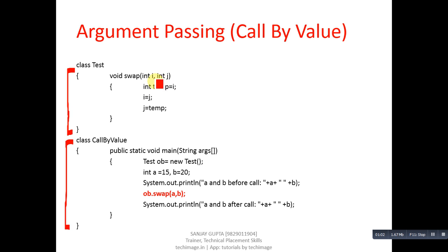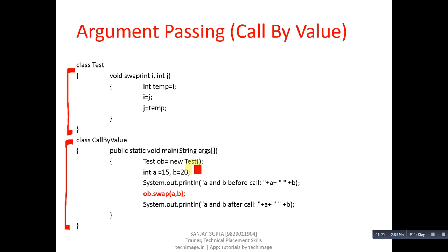The Test class contains a swap method in which two integer type arguments are received and a swapping operation is performed. In the CallByValue class, the main method is defined. An object of Test class is created with new, then two variables a and b are initialized with 15 and 20. The swap method is called with the help of ob, passing a and b as actual arguments, which are received by i and j as formal parameters.